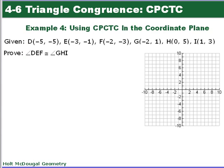We're going to prove something using the coordinate plane — that two triangles given by these coordinates are congruent. We can't find angles on the coordinate plane, but we can find side lengths. So we'll show all sides are congruent and prove them congruent by Side-Side-Side, then use CPCTC to show the angles are congruent.